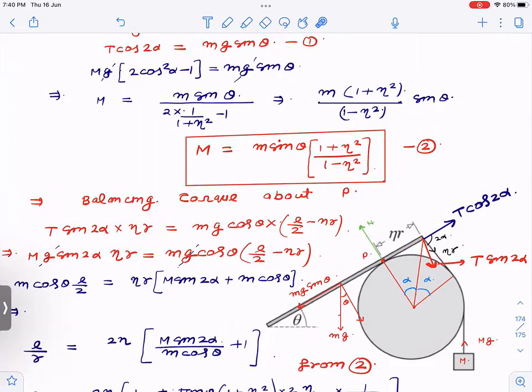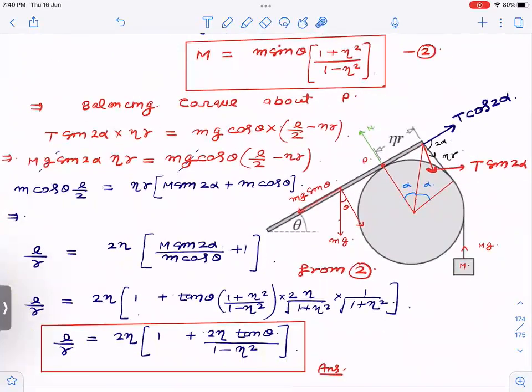Torque of T sin 2α into ηr, and the component mg cos θ into l/2 minus ηr. I have taken ηr on one side, l/2 on another side, so l/r comes out to be 2η M sin 2α divided by (m cos θ + 1). I have divided by m cos θ on this side also.